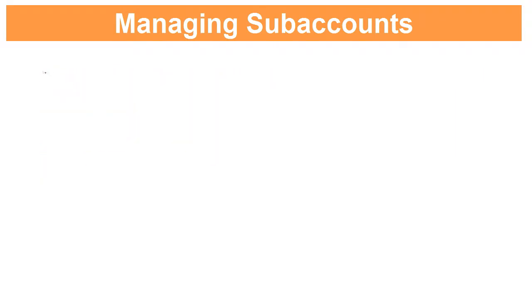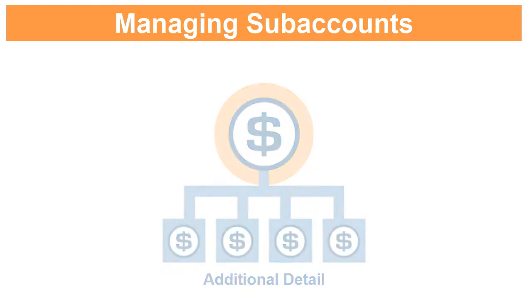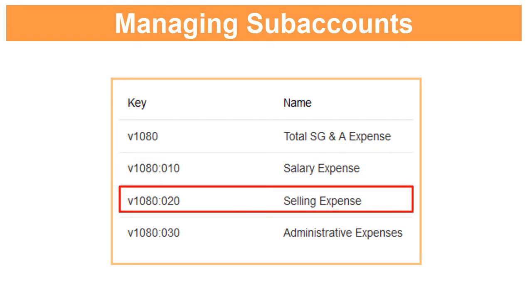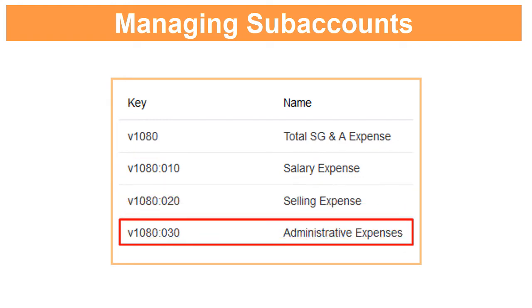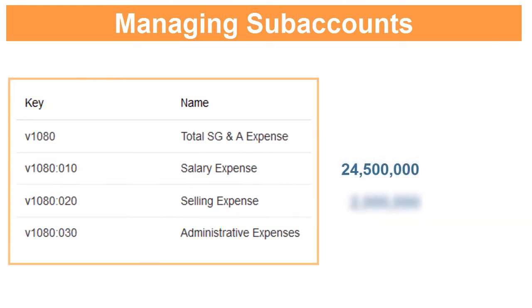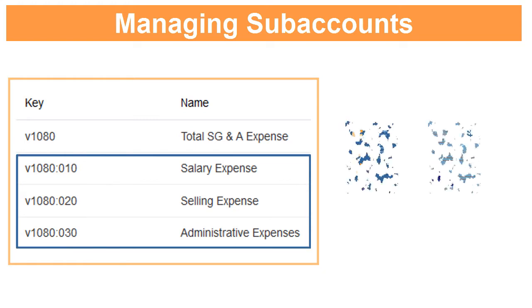Include subaccounts to provide additional detail within standard financial accounts. For example, within total SG&A expense, you can include subaccounts for salary expense, selling expense, and administrative expenses. That way you can keep track of and report on these distinct components. Each subaccount is displayed in the Account view and in respective financial statements.